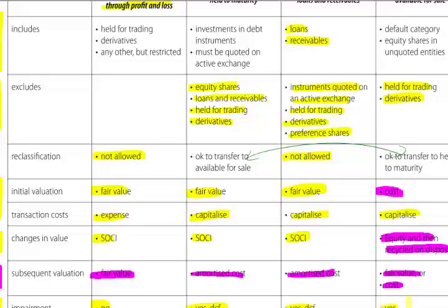I think if financial instruments were to come in an F7 exam, I see it most likely as a brief explanation of the four categories, maybe an explanation of the initial valuation, maybe subsequent valuations, maybe the inclusions and exclusions. But this table on page 147 does seem to me to summarise nicely, briefly, and easily — a topic which you could probably learn.